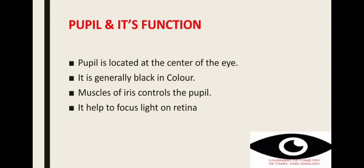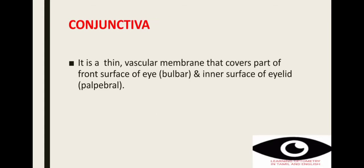The next part is the pupil. Pupil is generally black in color and is located at the center of the eye. Actions of the pupil are controlled by the muscles of the iris. When high intensity light enters our eye, the pupil constricts. When very low intensity light enters, the pupil dilates, helping to focus the correct amount of light on the retina.